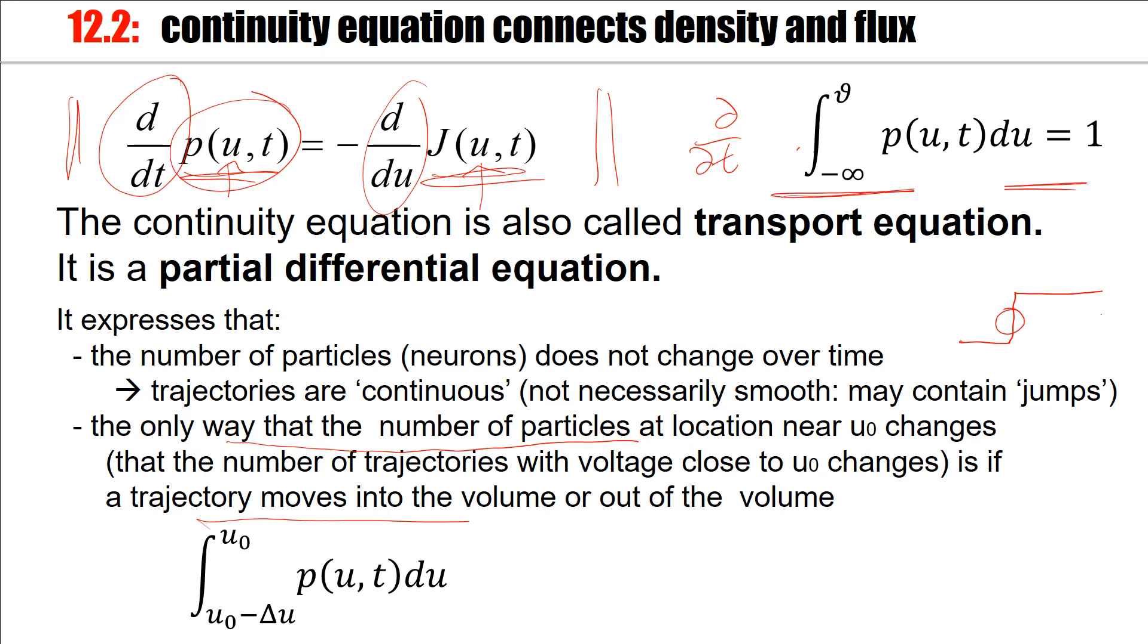Now, there's a law attached to it. It's really a density, which means for my neurons, if I integrate from minus infinity up to threshold, I've integrated over all neurons. The membrane potential cannot be higher than threshold. Then this must always be equal to one.